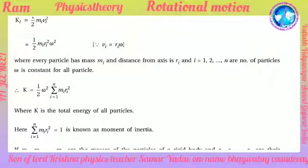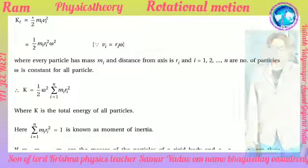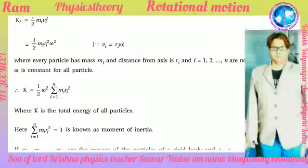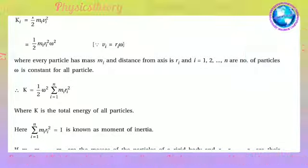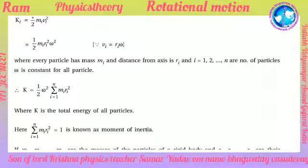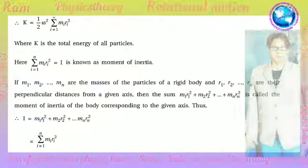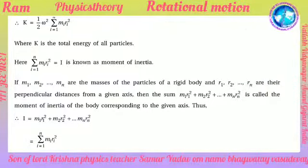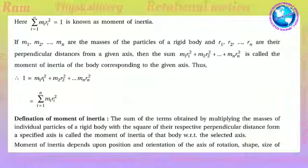Omega is constant for all particles. Therefore, total kinetic energy K = 1/2 omega^2 * summation(i=1 to n) mi ri^2, where K is the total energy of all the particles. The term summation(i=1 to n) mi ri^2 = I is known as the moment of inertia.